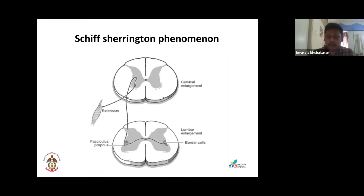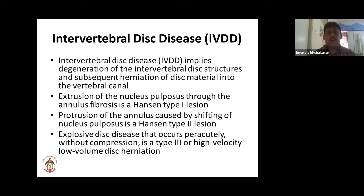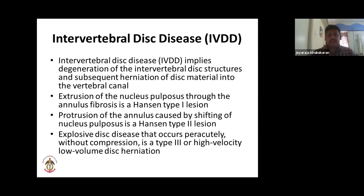Now we'll go into the diseases properly. The most common is intervertebral disc disease, which occurs because of degeneration of the intervertebral disc structures. Due to aging or inherited factors, the disc becomes weak and the disc material herniates into the vertebral canal, compressing it. This can happen in two ways: Hansen Type 1 is extrusion of the nucleus pulposus through the annulus fibrosus; Type 2 is protrusion of the annulus fibrosus without rupture; and Type 3 is a small-volume disc herniation without much compression.